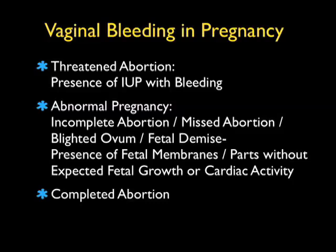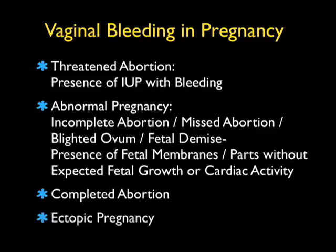All of these mean the presence of fetal membranes or parts without expected fetal growth or cardiac activity. The third main classification is a completed abortion, in which there is no further presence of fetal membranes or parts, and the cervical os will usually be closed. The fourth main classification, and the most dangerous, is ectopic pregnancy.